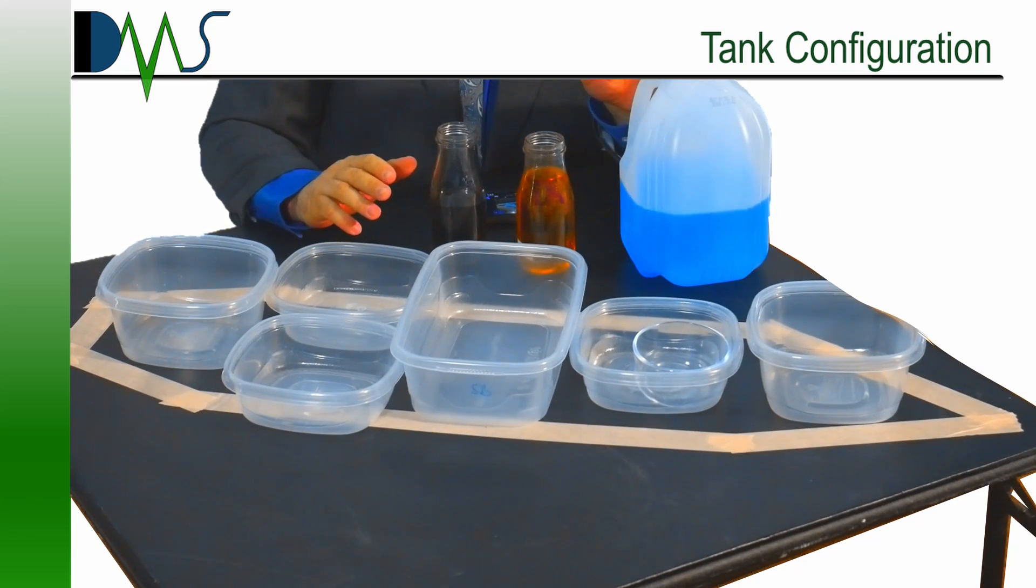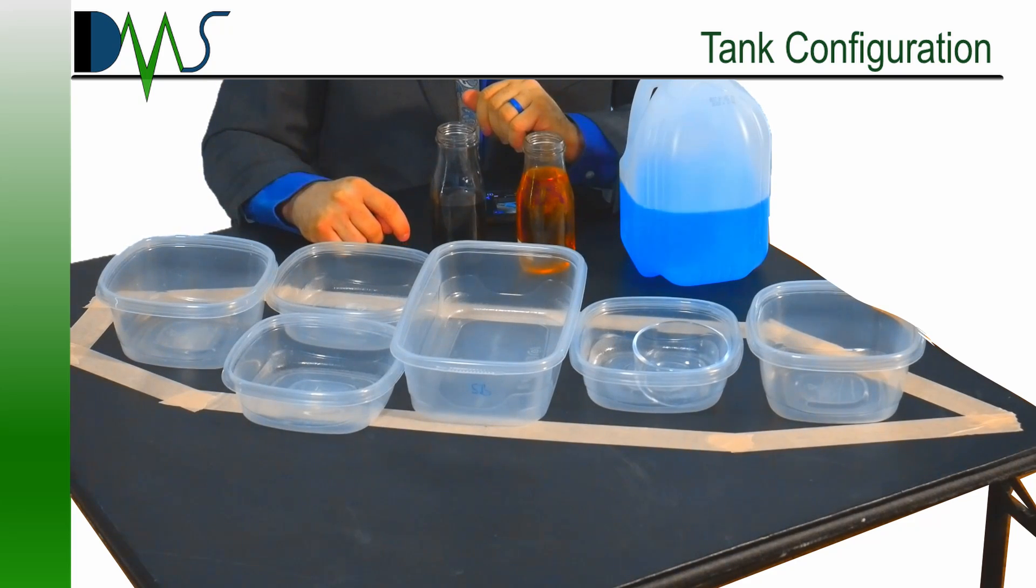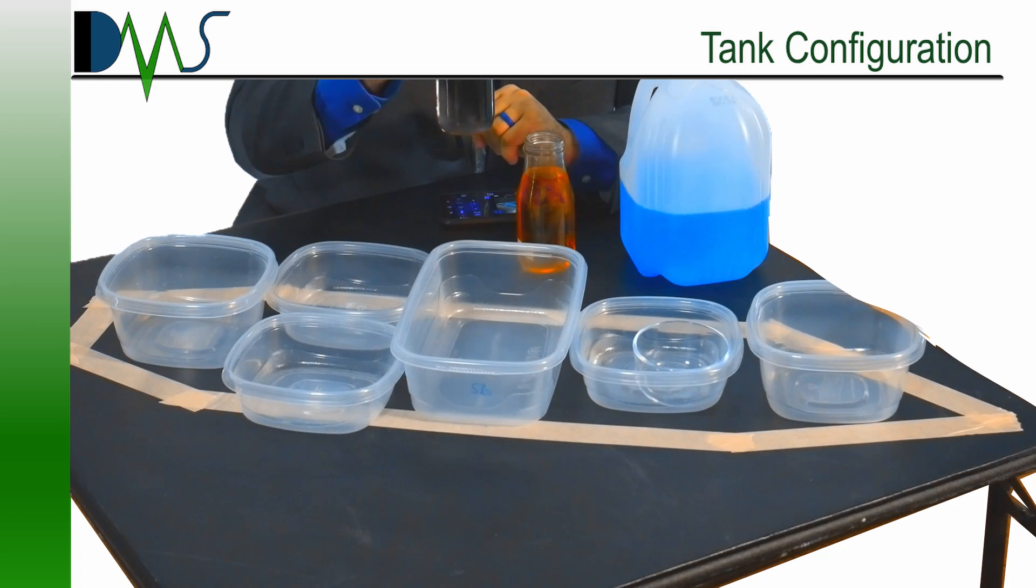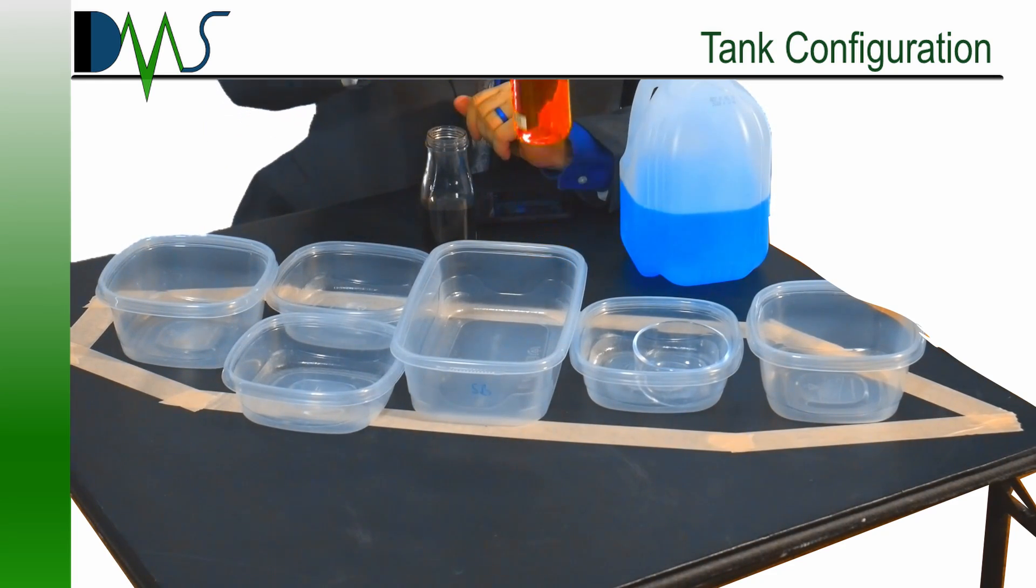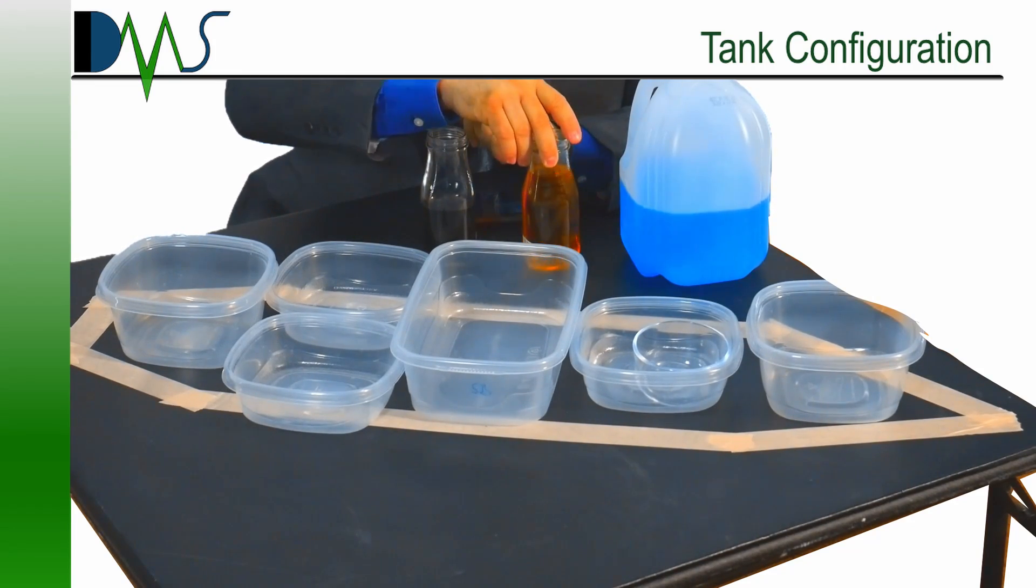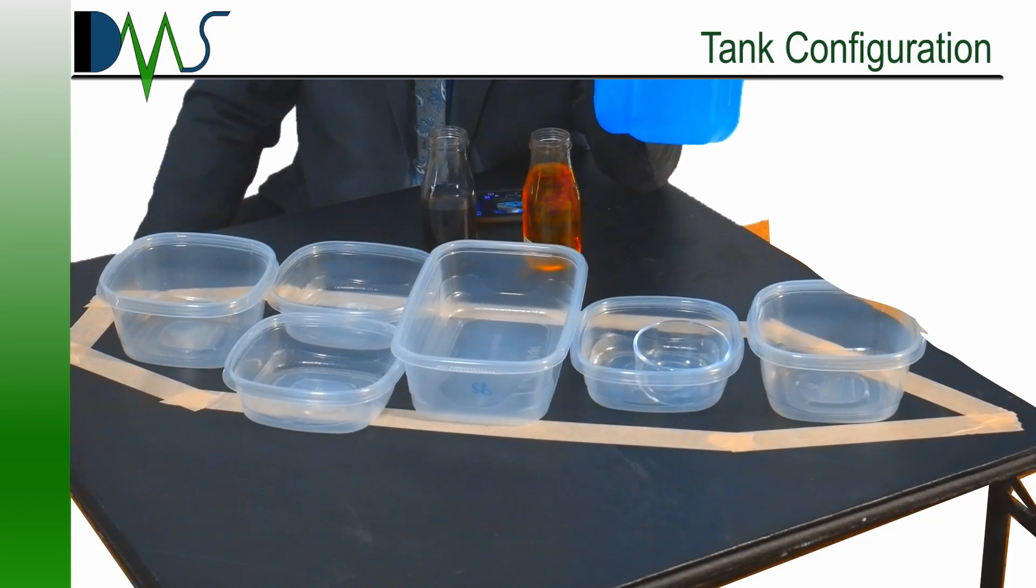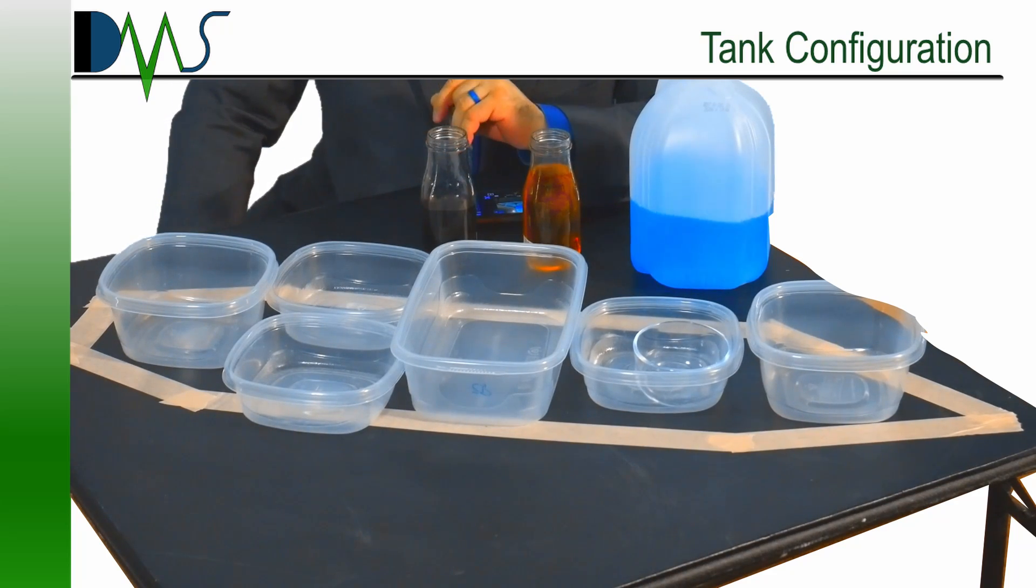Don't worry, in this demonstration, this is just water with food coloring. But let's make it a little more interesting. Let's pretend that this green liquid is hydraulic oil that we need to find a place for. And let's pretend that this yellow liquid is diesel, fuel oil, that we need to find a place for. And then this large volume of blue liquid, we'll pretend this is ballast water.